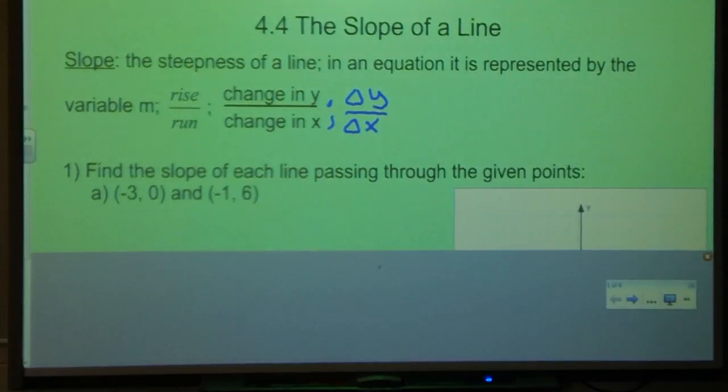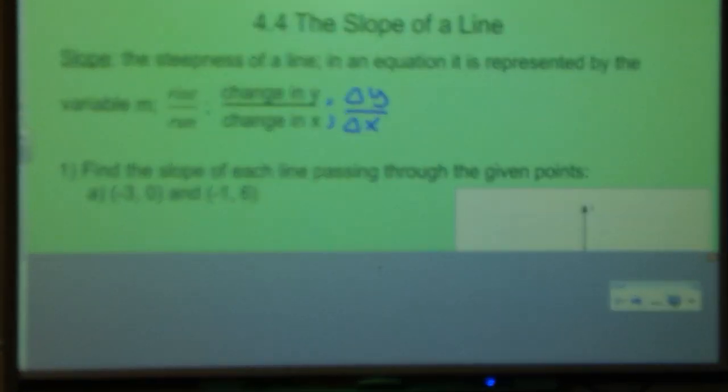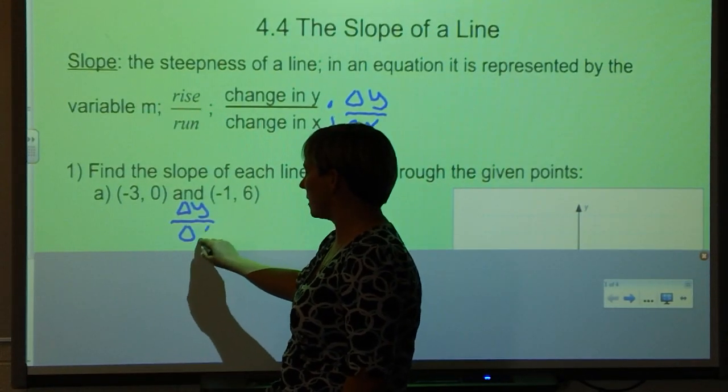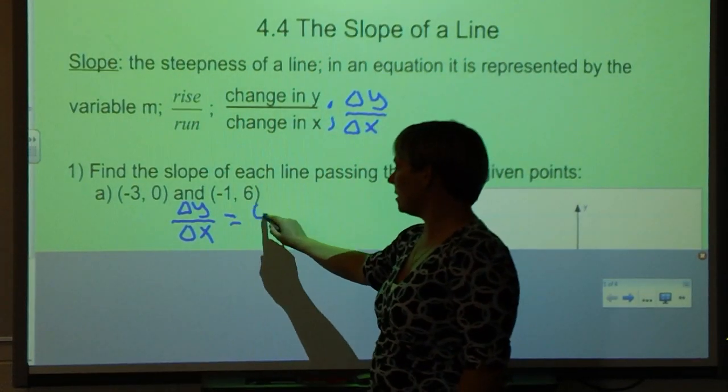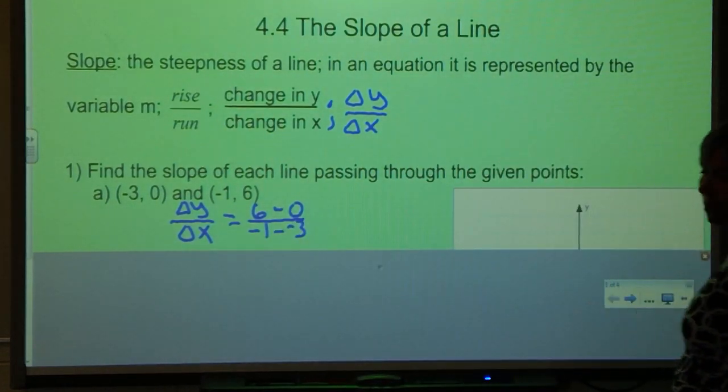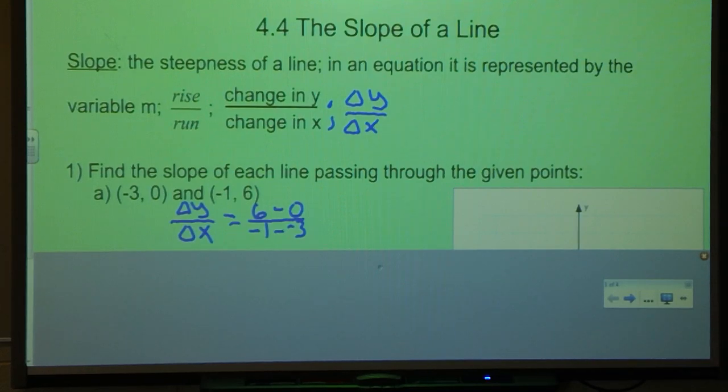If I want to find the slope of a line passing through two given points, I'm going to find my change in my y values over my change in my x values. So showing my work I would have Δy over Δx is equal to 6 minus 0 over -1 minus -3. Remember it doesn't matter which order you subtract your y values. You could do 6 minus 0 or you could do 0 minus 6 as long as you're consistent in your denominator. For example you do not want to do 6 minus 0 in the numerator and -3 minus -1 in the denominator. Your points need to line up.